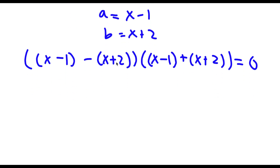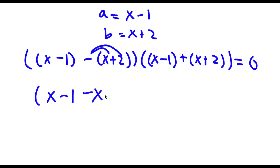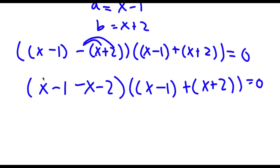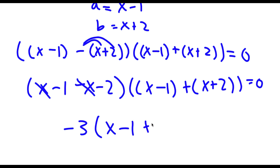Now x minus 1 minus x plus 2 — we can simply distribute the negative sign. So now I have x minus 1 minus x minus 2, times x minus 1 plus x plus 2, is equal to 0. Now x and negative x cancel out, and negative 1 and negative 2 gives negative 3. So now I have negative 3 times x minus 1 plus x plus 2, is equal to 0.